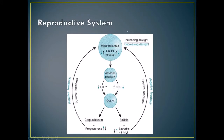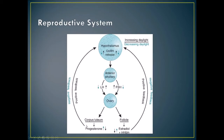In the reproductive system, the stimulus of increasing versus decreasing daylight varies by species and relates to gestation length. It starts with the hypothalamus releasing gonadotropin-releasing hormone, which acts on the anterior pituitary to release FSH. FSH stimulates the ovary to develop a follicle. As the follicle grows, it releases estrogen, which feeds back to cause LH release. LH causes ovulation and supports the corpus luteum, which produces progesterone — feeding back to the hypothalamus.